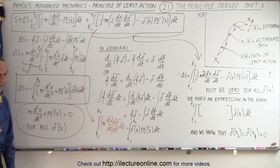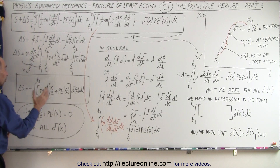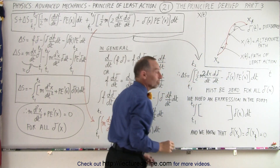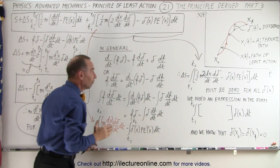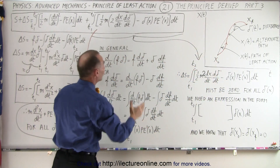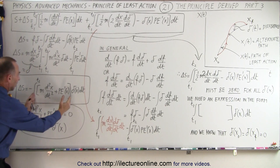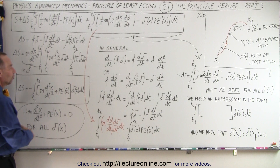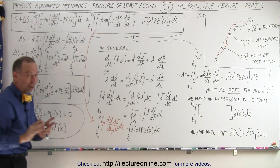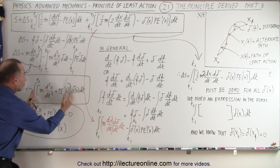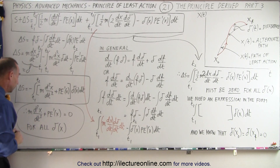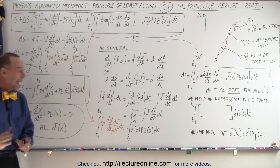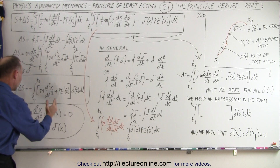Why is that form so important? For this integral to go to zero — which is what we're claiming — if an alternate path converges to the path of least action, the delta function goes to zero. But for any path where delta X does not equal zero, for delta S to still go to zero, the expression inside the brackets must go to zero. So for any delta function that is not zero — meaning we're on an alternate path — that bracketed term must equal zero. Then we're guaranteed to be on the path of least action.